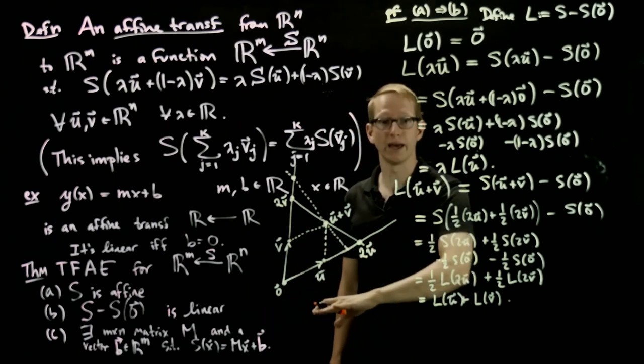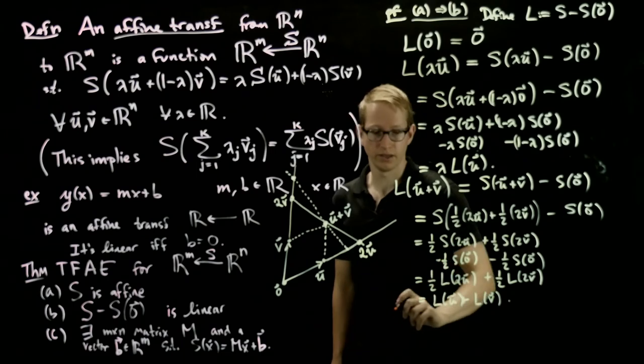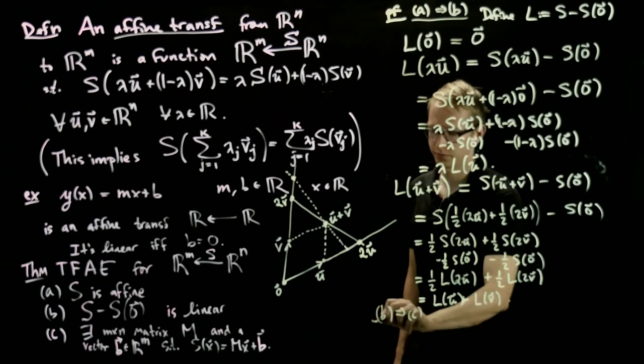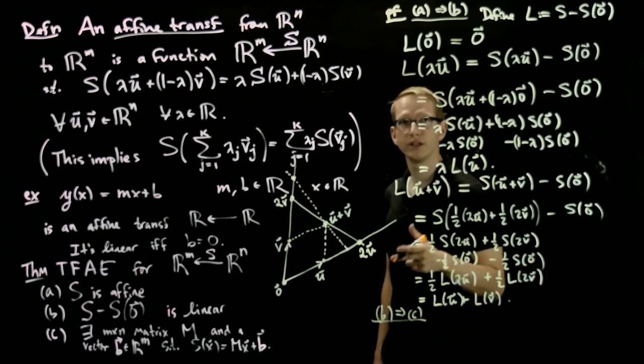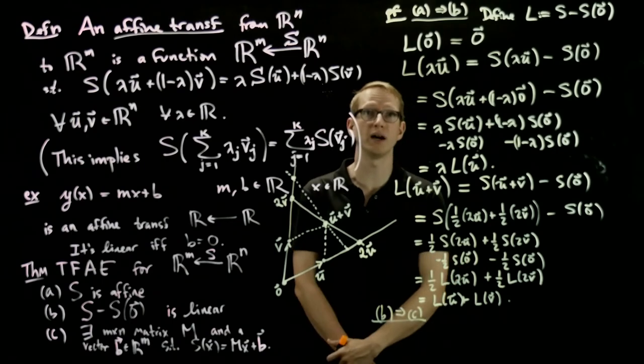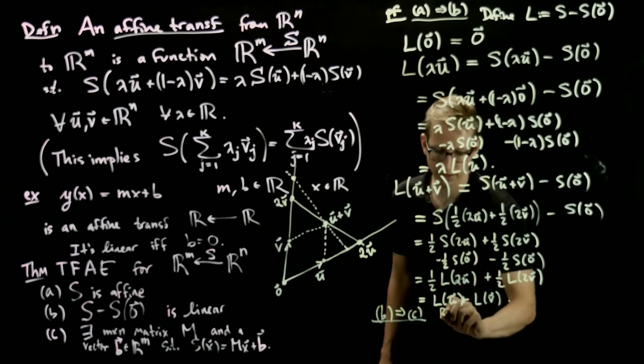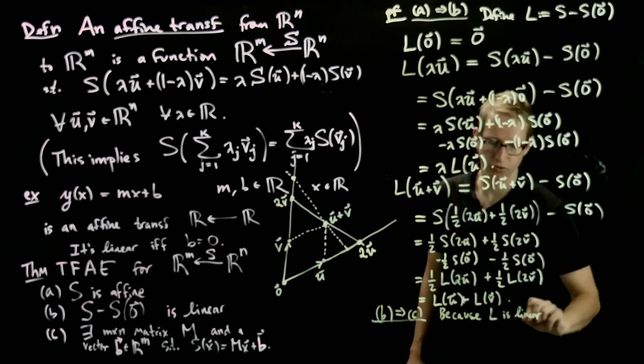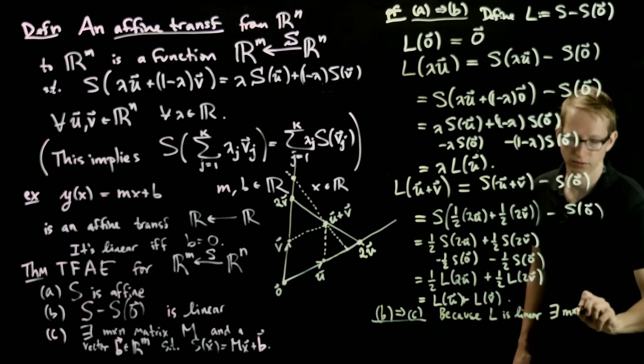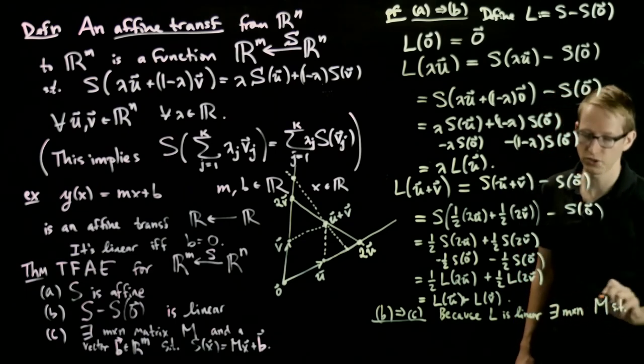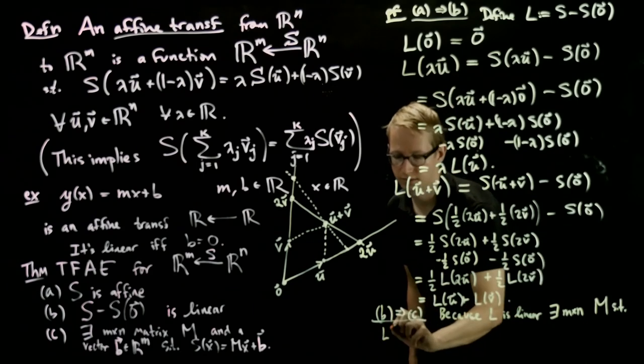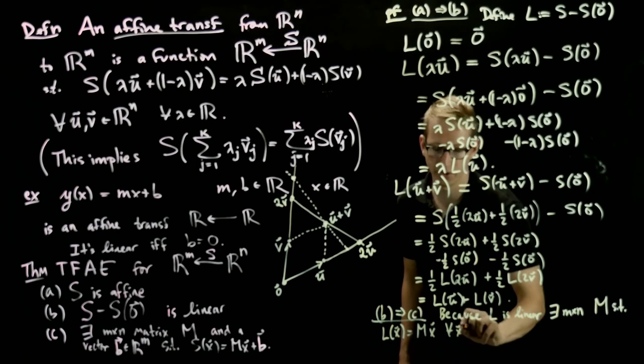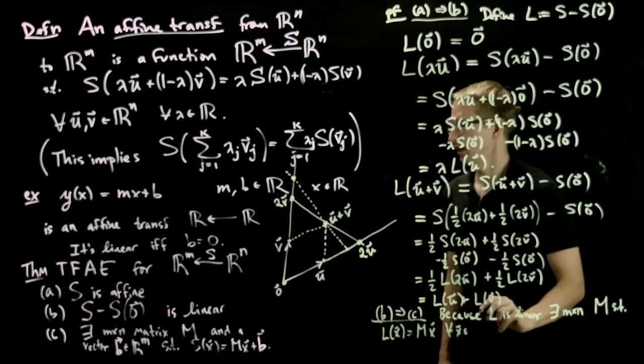Now the rest of the proof is actually not bad afterwards because for b implies c, if we have a linear transformation, we already know we have a matrix corresponding to it. So because L is linear, we get an m by n matrix such that L(x) = Mx for all x in the domain of s, which is R^n.